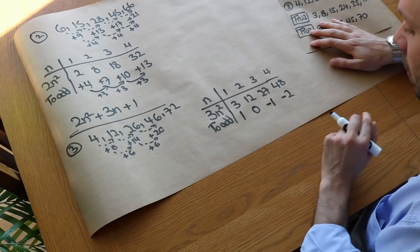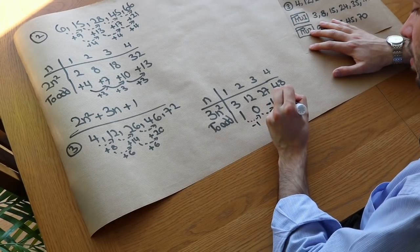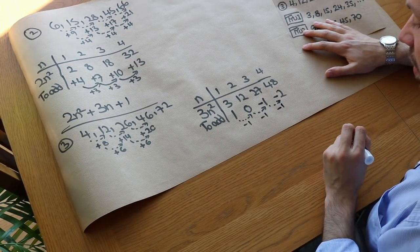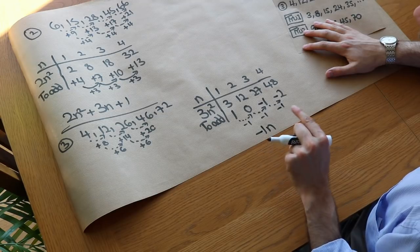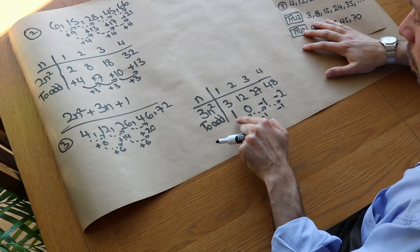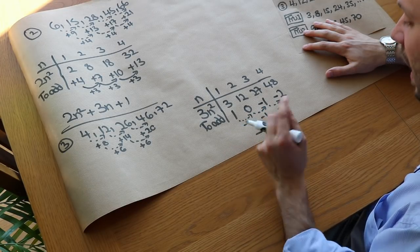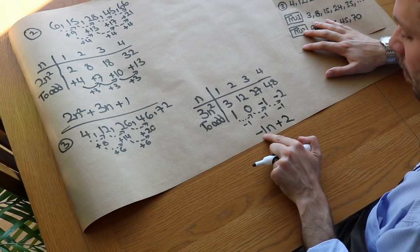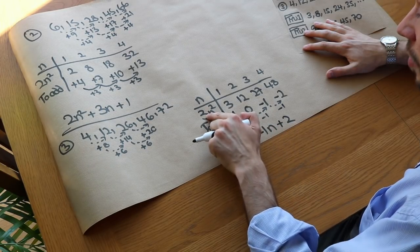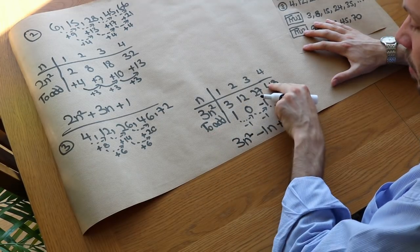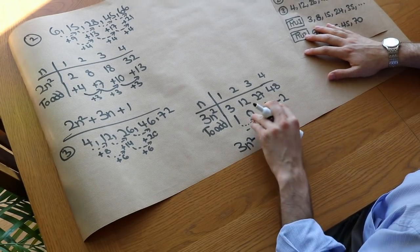We need the formula for the correction sequence 1, 0, minus 1, minus 2. Its difference is minus 1 each time, so the formula starts with minus n. The minus 1 times table gives minus 1, minus 2, minus 3 — but we want 1, 0, minus 1, so we add 2. The correction formula is minus n plus 2. Therefore the final formula is 3n squared minus n plus 2.